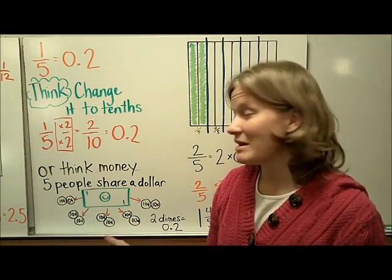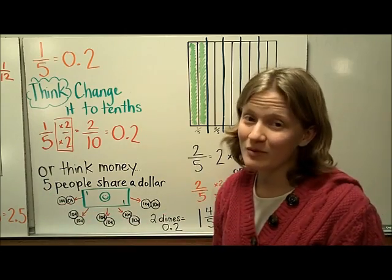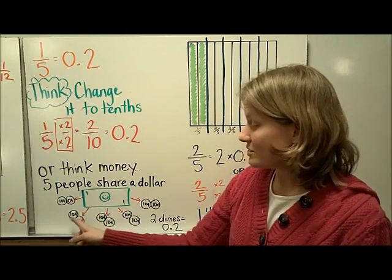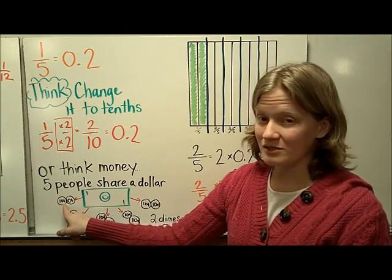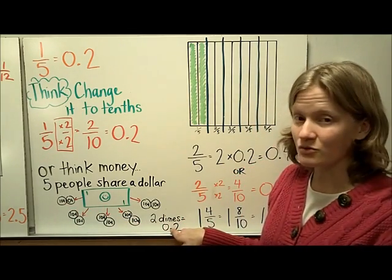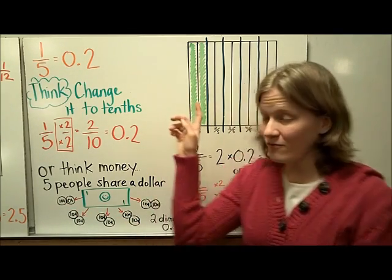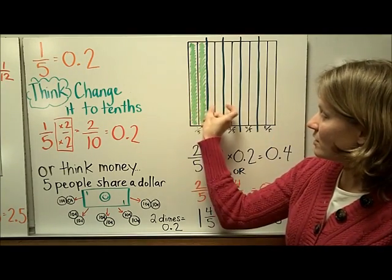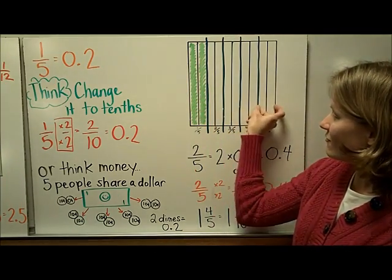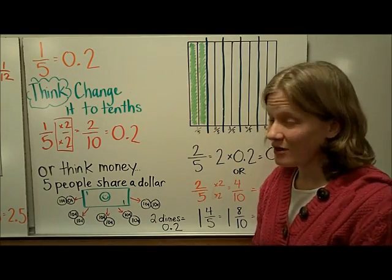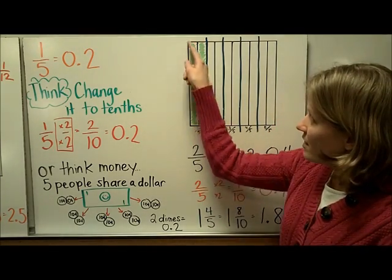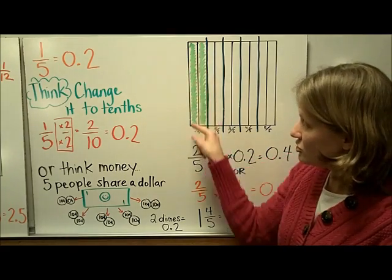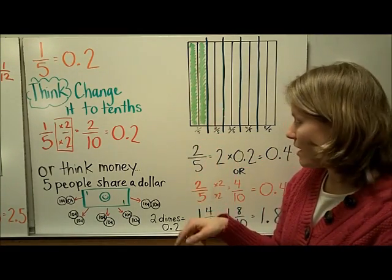You can also think about it like money though. If you think about 5 people sharing a dollar, each person would get 2 dimes, which is equal to 20 cents or 2 10ths. Here in the flat, we can see that the flat has been divided into 5 pieces, 1, 2, 3, 4, 5 to represent 5ths. And then 1 of those 5ths is equivalent to 2 10ths or 2 rods.